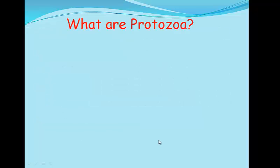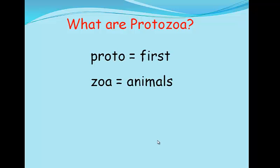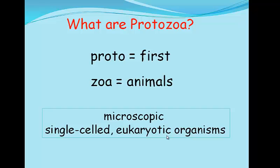So what are protozoa then? Originated from Greek terminology, proto meaning first and zoa meaning animals, they were thought to be the first animals. They are microscopic, single-celled, eukaryotic organisms.